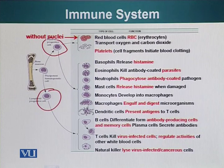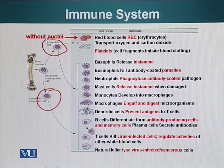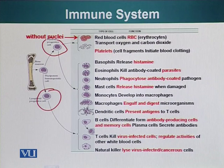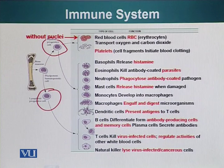The lymphoid progenitor cells give rise to lymphocytes. There are three different types of lymphocytes: B cells, which make antibodies; T cells, which kill virus-infected cells and, most importantly, regulate the activities of other immune cells; and the third category, natural killer cells, which lyse virus-infected cells or cancer cells. All these cells come from lymphoid progenitor cells.